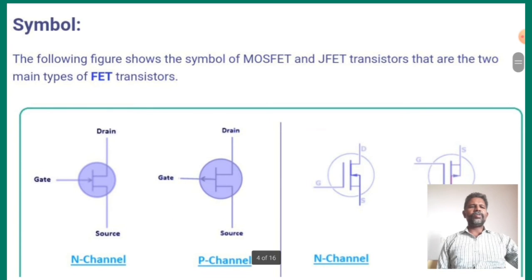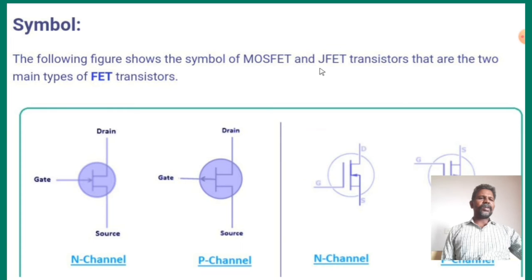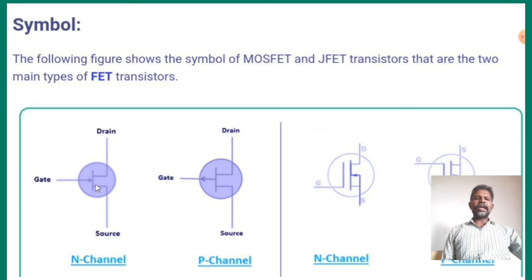What are the symbols? We are representing the symbols. The following figure shows the symbols for MOSFET and JFET. A transistor has two main types of field effect transistors. This is where we represent the N-type transistor — this is the N-channel transistor and this is the P-channel transistor.